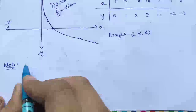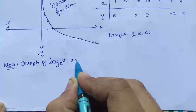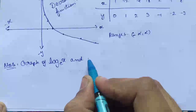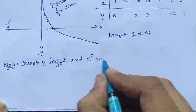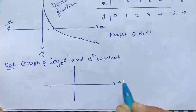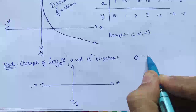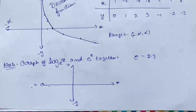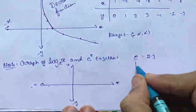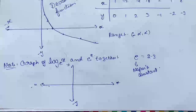Now here is a small important point to note. We will draw the simultaneous graph of log(x) base e and e raised to the power x together. Let this be the positive x-axis, positive y-axis, negative x and negative y. The value of e is called Napier's constant and its value is approximately 2.3.